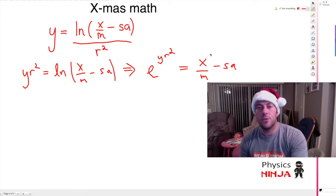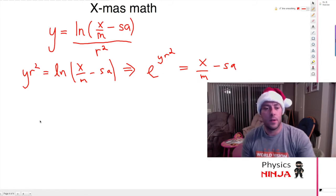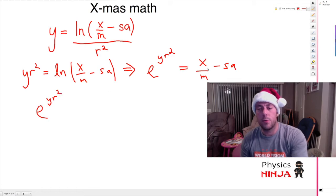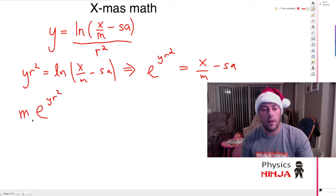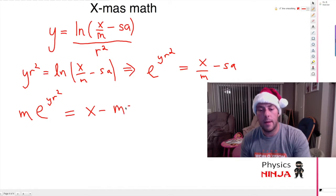The next step, we're going to get rid of this m in the denominator. So we have e to the yr squared. If I multiply through both sides by m, I'm left with m e to the yr squared equals x minus msa.